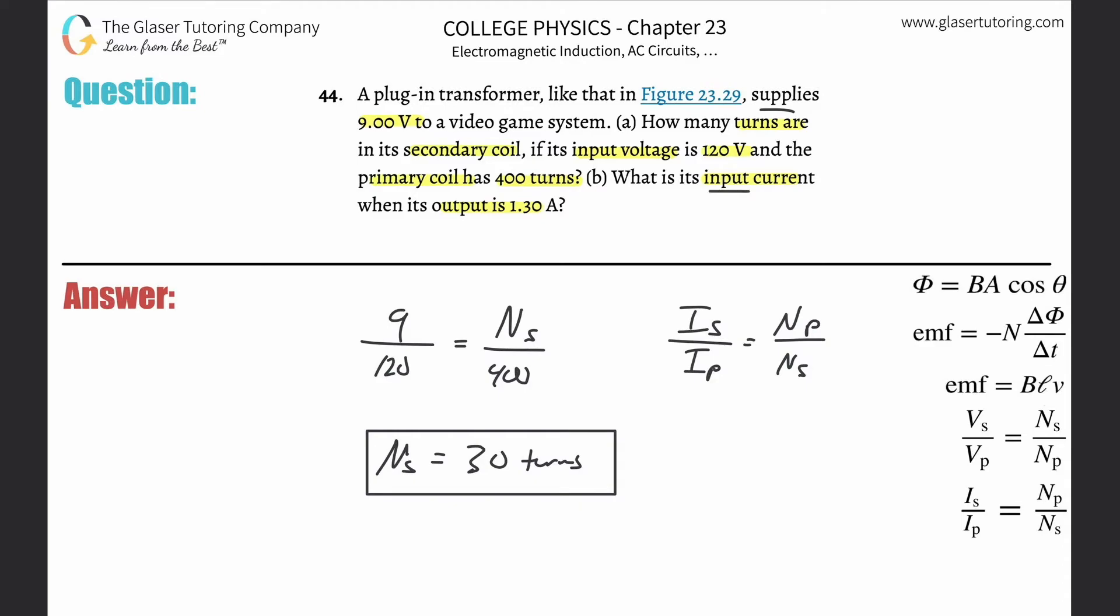So what is the input current? We already talked about that. That's basically the primary current, the output then would obviously be the secondary. So now we have enough information we can use to plug everything in. So this is basically 1.3 over the current in the primary coil. And then the number of turns in the primary, we know they told us was 400. The number of turns in the secondary, we just calculated.